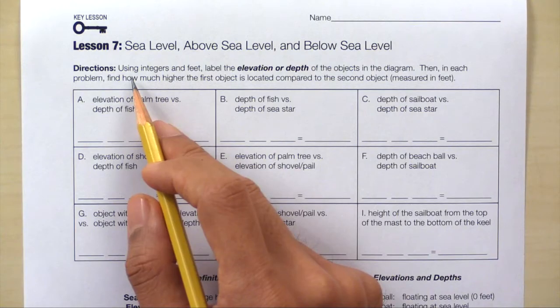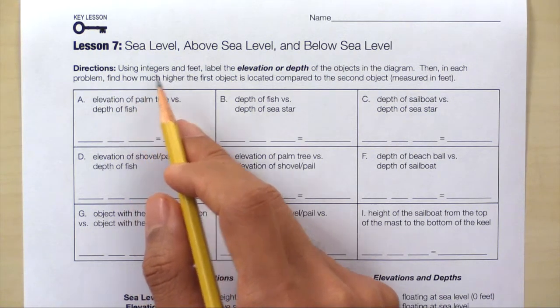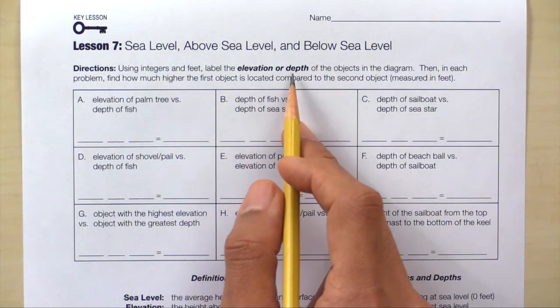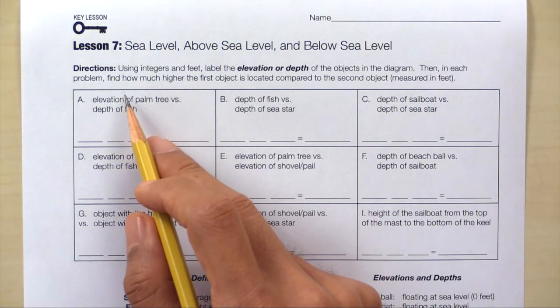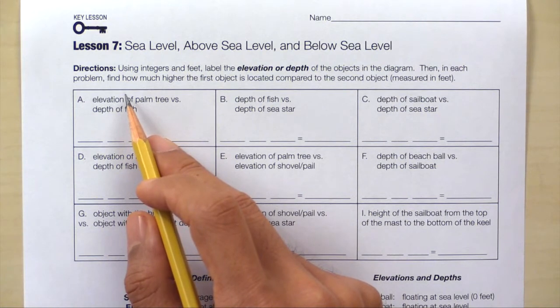Take a look at the directions. Using integers and feet, label the elevation or depth of each of the objects in the diagram. Then, in each problem, find out how much higher the first object is located compared to the second object, measured in feet.